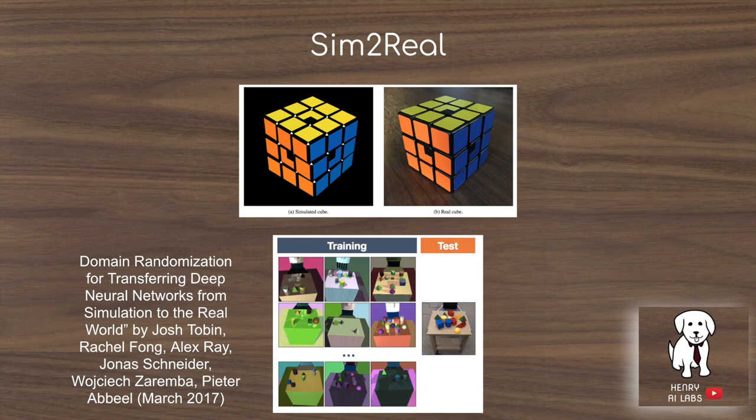The problem that domain randomization aims to solve is the simulation-to-reality gap. Shown on the left is the simulated cube in the simulated environment, and on the right is the real cube in the real physical world. This idea of domain randomization was first introduced in March 2017, where instead of simulating a completely realistic visual world, you simulate a massive, diverse set of visual worlds that will hopefully generalize to the real world.